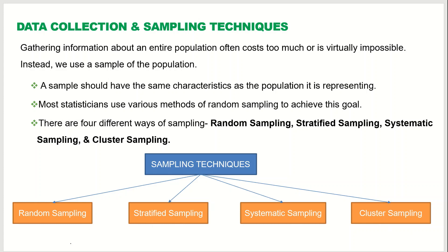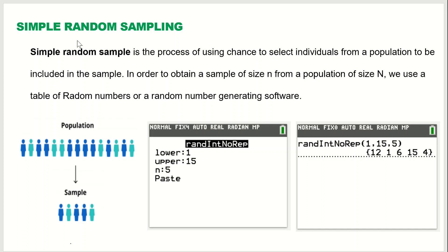First, what is simple random sampling? To obtain a sample of size n from a population of size uppercase N, we use a table of random numbers or random number generating software like a TI-84 calculator.